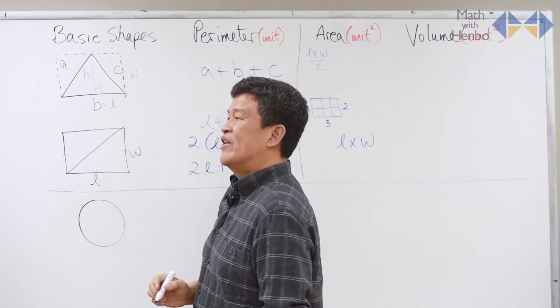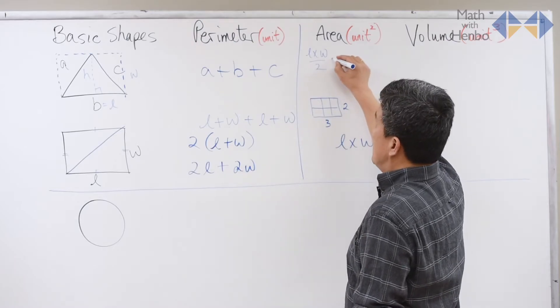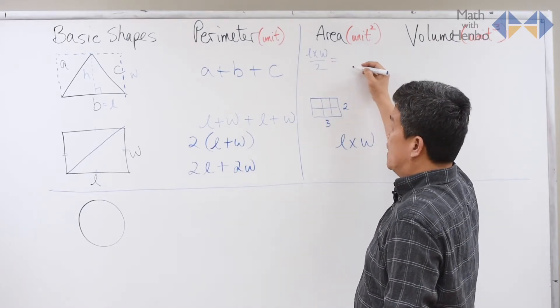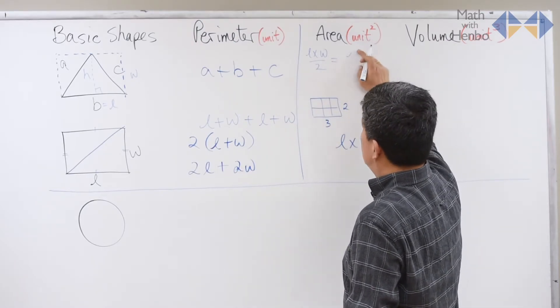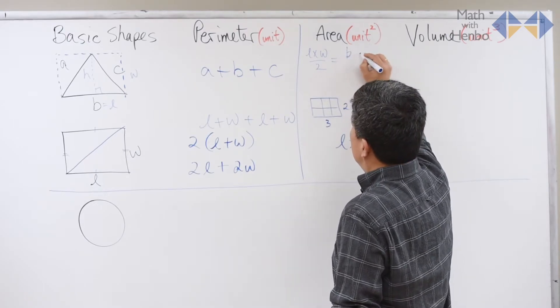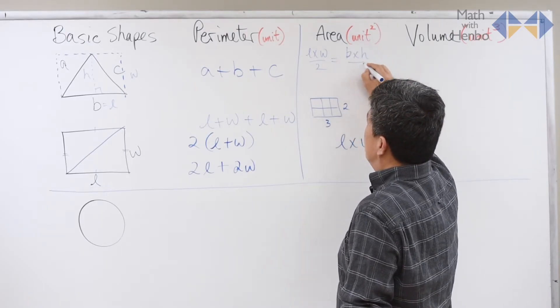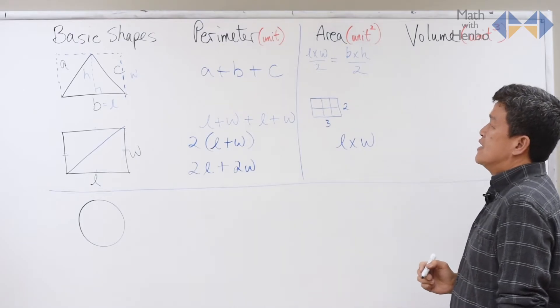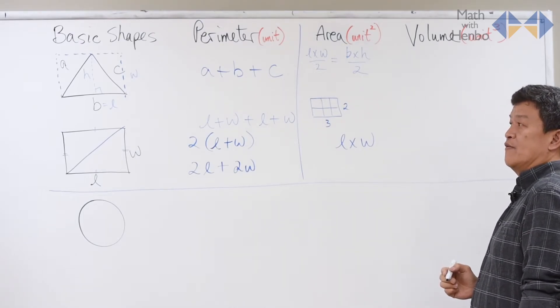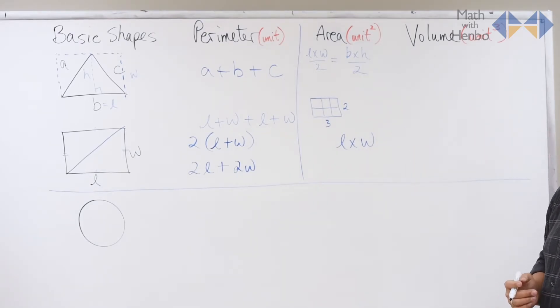But in a triangle, we call that a height. So essentially, length times width divided by two becomes length, which is base, times height being divided by two. And that essentially is the formula for the triangle that we see over there.